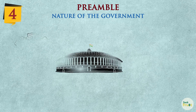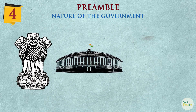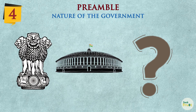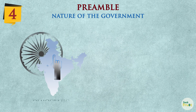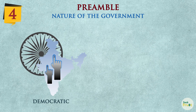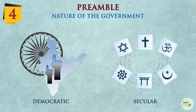4. It declares the nature of the government. It wants India to be a democratic country where the government is for the people and by the people. It also wants India to be a secular one. 5. The state does not have any religion.